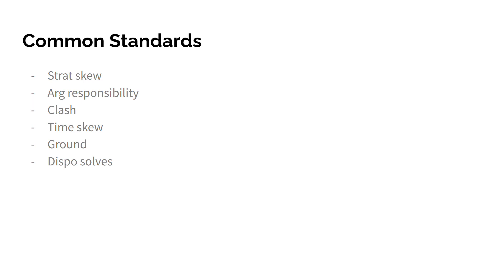Another common standard is ground. Basically, you are erasing affirmative ground from the debate by kicking out of a part of the debate where they have offense. For instance, if the affirmative is putting offense on a counterplan or a critique, you are actively erasing that ground they have. By kicking out of the counterplan or critique, you're also restricting the scope of the debate, which influences ground and that fairness question.